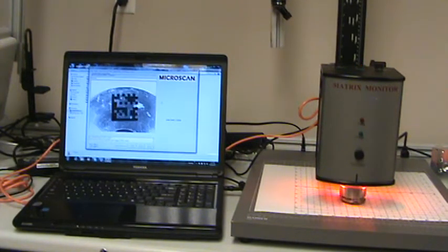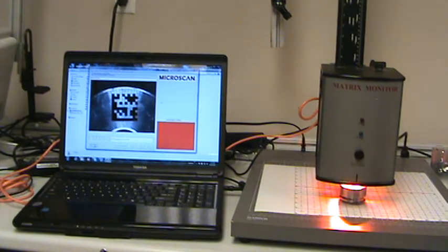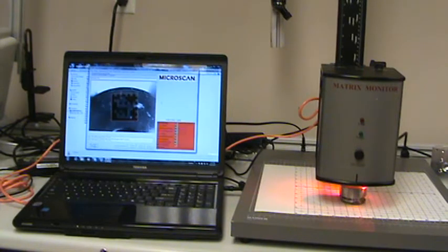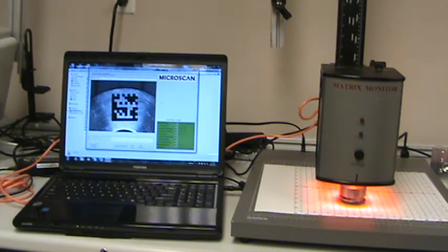Now what I've done is I've set it up to only pass a mark that has at least a B quality grade, and this is using AIM DPM 2006. So as soon as it uses a light that it likes, it will go ahead and grade it. There you go, and it graded, and I'll zoom in on that so you can get a better look at it.